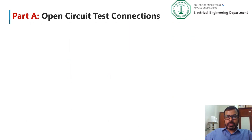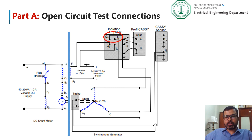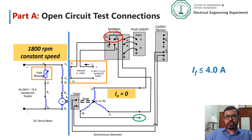In today's experiment we have two parts. In the first part we will study the open circuit characteristics of the synchronous generator. Here is the open circuit test connection. On the right side we have the connection for the synchronous generator, and on the left side we have the connection for the DC shunt motor. From the circuit, terminals U1 and V1 of the synchronous generator are connected to a voltmeter, whereas terminal W1 is not connected to anything, so there will be no armature current flowing. To see the voltage buildup, we vary the field excitation, which should not exceed 4 amperes. Speed must be kept constant at 1800 RPM by varying the field rheostat of the motor.